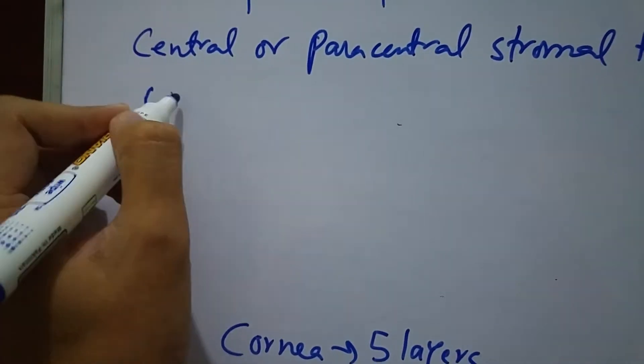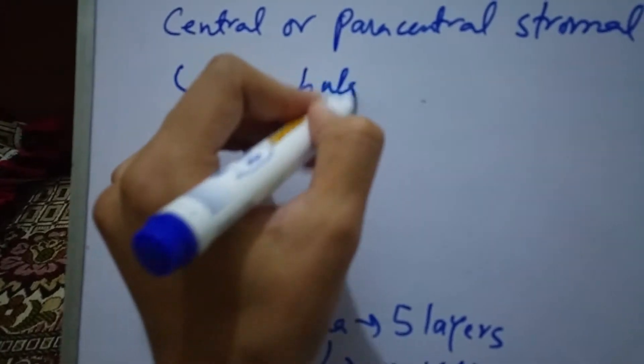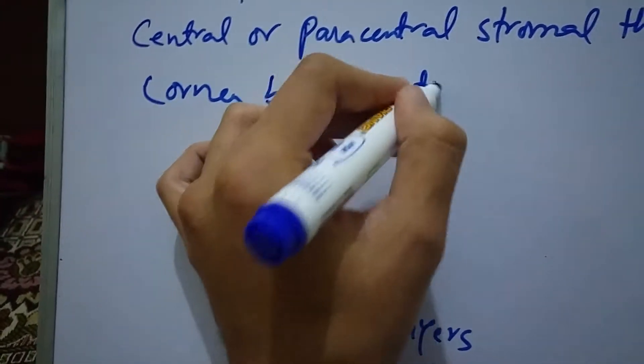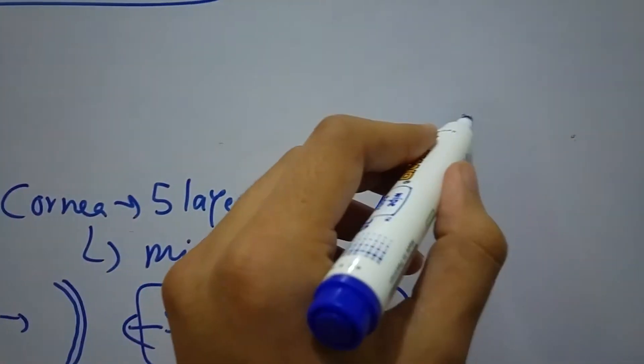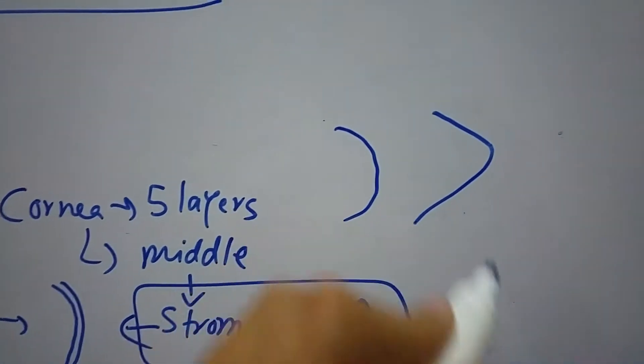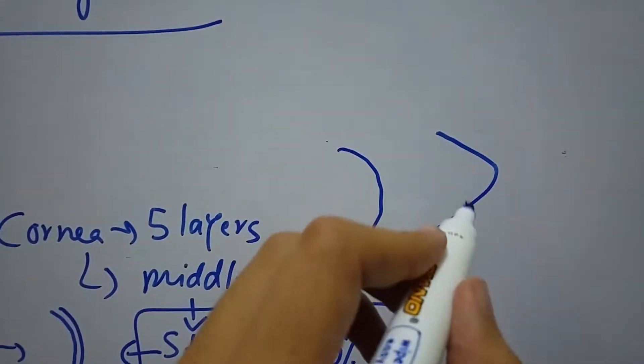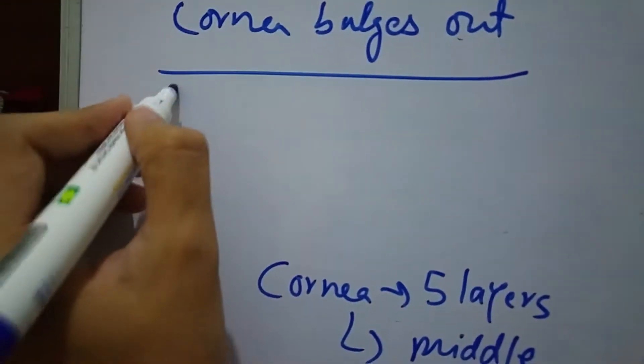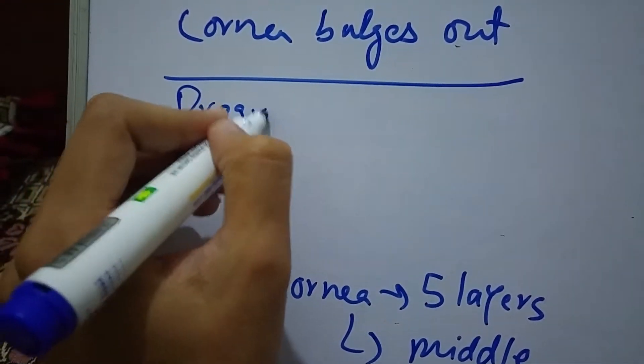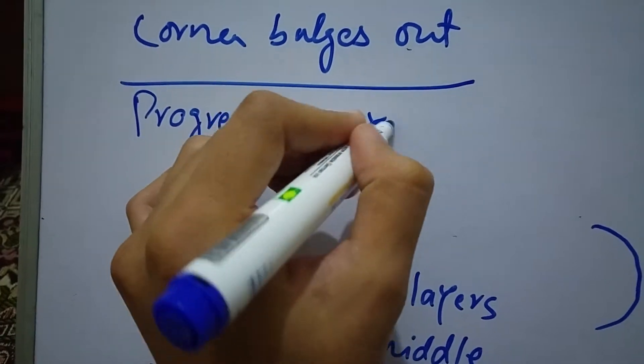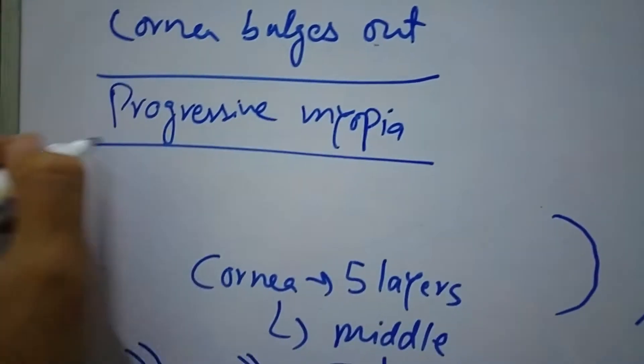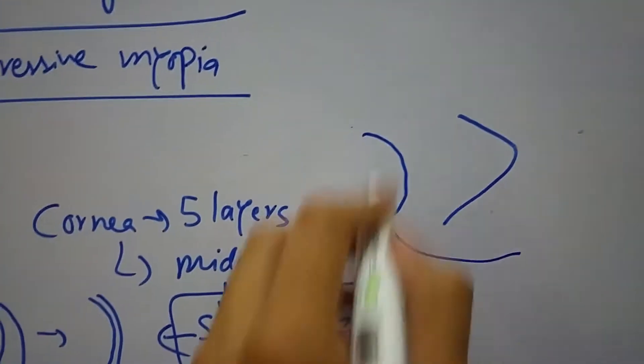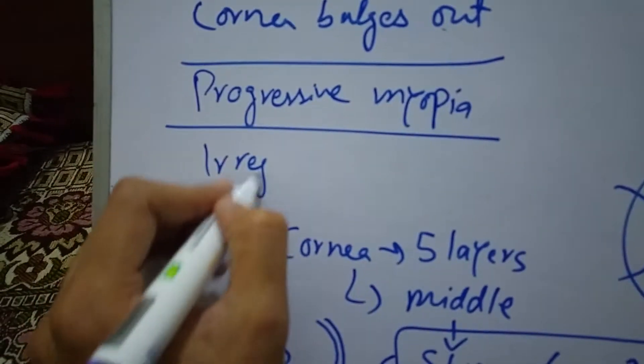And number two is that the cornea bulges out. It means that if this is the normal cornea, in keratoconus it comes outside like this, so the shape of the cornea is changed. And this results in progressive myopia, and due to continuous change in the shape it causes irregular astigmatism.